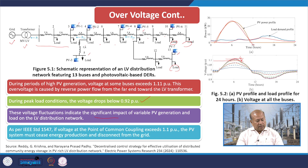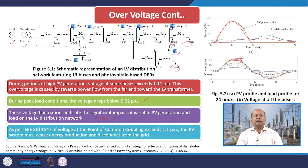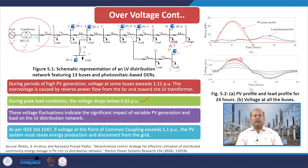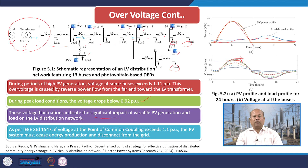As per IEEE standard 1547, if voltage at the point of common coupling exceeds 1.1 per unit, the PV system must cease energy production and disconnect from the grid. So at the PCC, if the voltage is more than 1.1 per unit, we have to de-rate or curtail generation from the PV — that is a strict guideline. It is therefore very important to plan properly how, where and what amount of PV to be integrated so that de-rating or curtailment in PV generation does not take place.